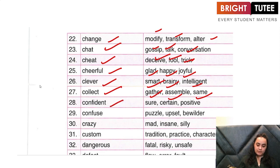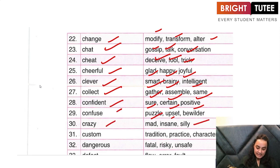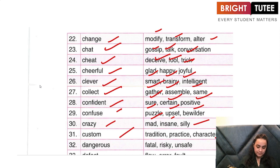'Confident' — sure, certain, positive. 'Confuse' — puzzle, upset, bewilder. 'Crazy' — mad, insane, silly. What do we mean by 'custom'? The tradition, practice, or characteristic of something.